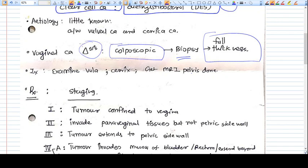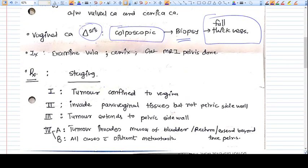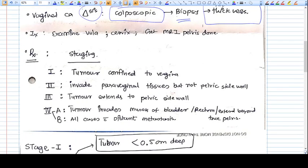Other investigations: whenever you find vaginal carcinoma, you always suspect another carcinoma like cervix and vulva. MRI pelvis should be done to know the status of lymph nodes or any other metastasis.